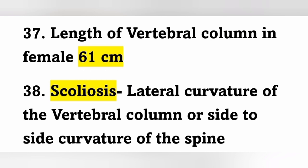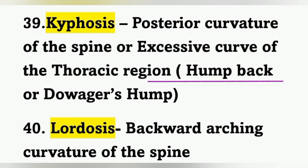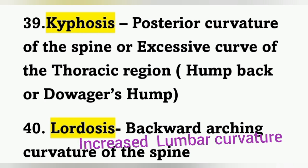Scoliosis means lateral curvature or side-to-side curvature of the spine. Kyphosis means posterior curvature of the spine — excessive curvature of the thoracic region — also known as humpback or dowager's hump. Lordosis means increased lumbar curvature or backward arching curvature of the spine.